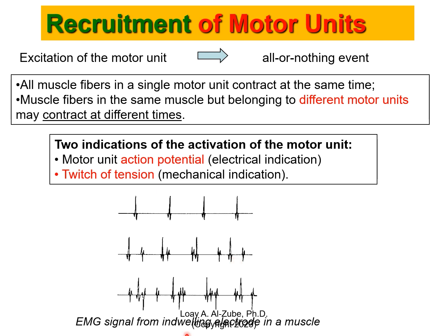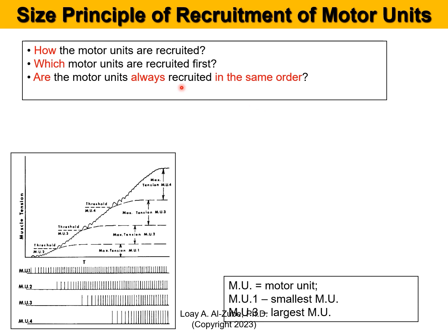The EMG signal from an indwelling electrode in a muscle is sensing a lot of other motor units. For the size principle of recruitment of motor units: any data set, in order to be useful, you need to understand what it is first. So how the motor units are recruited — which motor units are recruited first, and are the motor units always recruited in the same order?